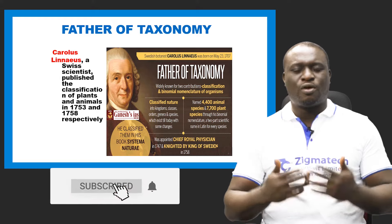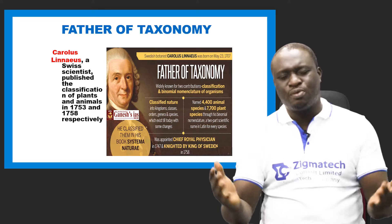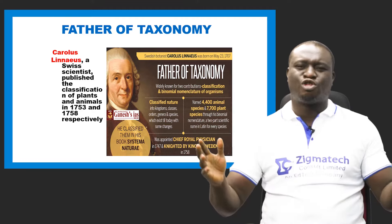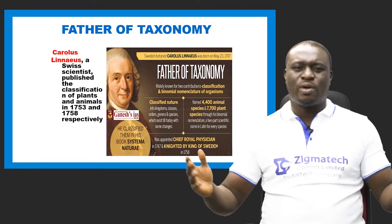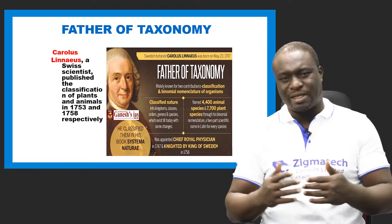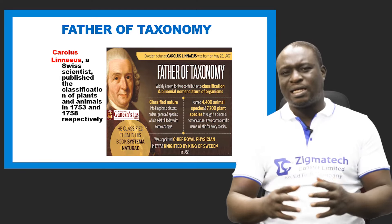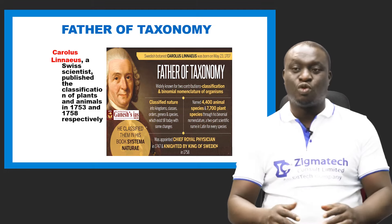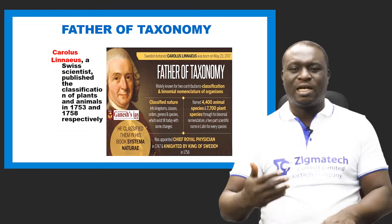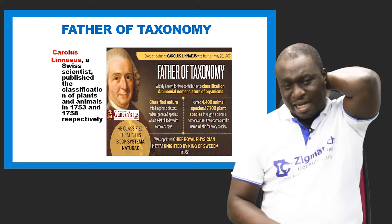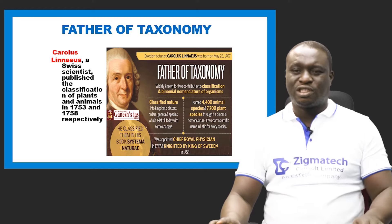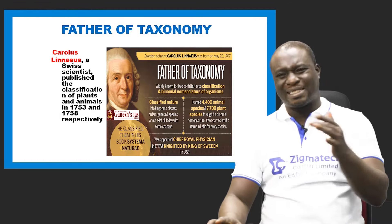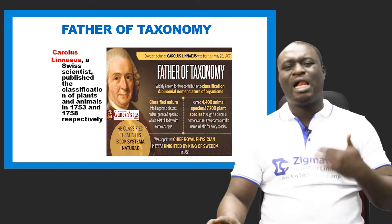There were several thoughts among scientists trying to see how to group or classify these living things, because the number of animals and plants is so large that scientists found it difficult. One man called Carolus Linnaeus, a Swedish scientist, came up with a system of classifying living things still used today. He classified plants in 1753 and animals in 1758, and we call him the father of taxonomy.